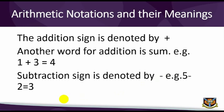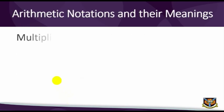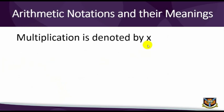Multiplication is denoted by times. When placed between two numbers, one of the numbers must be multiplied by the other. E.g. 3 times 4 is equal to 12. Another word for multiplication is product.